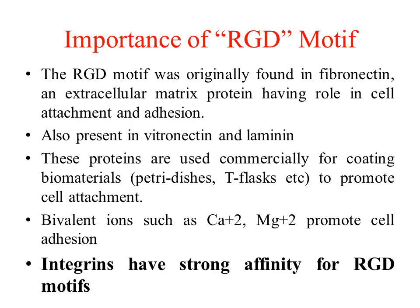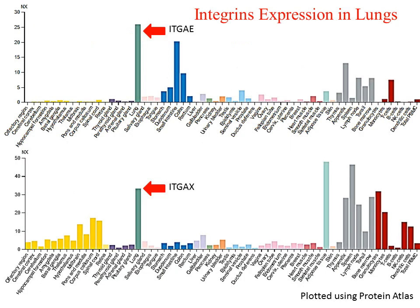This RGD motif was originally found in fibronectin and is well known for its role in cell attachment and cell adhesion using divalent ions such as calcium and magnesium. A number of human proteins show interaction with these RGD motifs. One such group of proteins are integrins, which show high affinity with these RGD motifs.